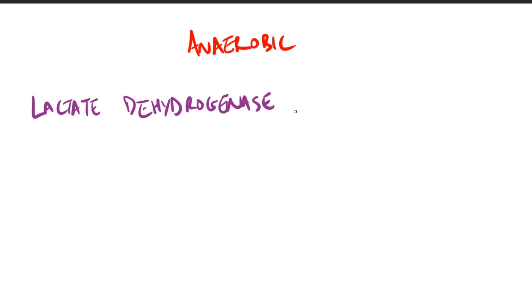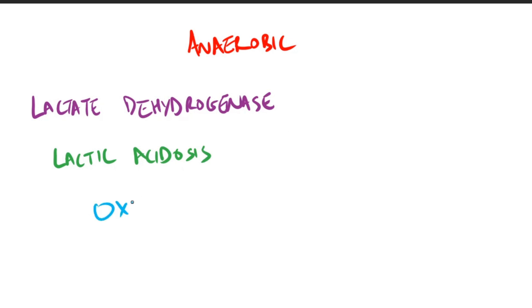Lactate is formed by the action of the enzyme lactate dehydrogenase. It is the final product of anaerobic glycolysis. Elevated concentrations of lactate in the plasma is termed lactic acidosis, and the excess oxygen required to recover from a period when oxygen availability has been inadequate is termed the oxygen debt.